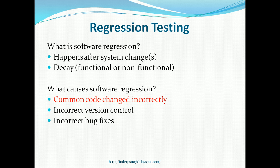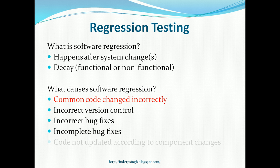Another cause of software regression can be incorrect bug fixes — the bug is fixed but in an incorrect way which causes unwanted problems. Or it can be incomplete bug fixes, where the bug is fixed in some area but not in every area that is required. It can also be that the code is not updated according to component changes. Whenever underlying components change, they are mostly fully backward compatible, but not always. So if a new database version is implemented, it may not work correctly with each of the existing features implemented in the software. The same applies to newer browser versions.